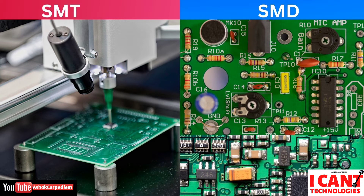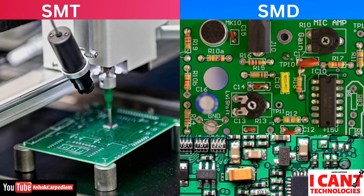For example, think of this as one SMT device. There is some machine which is used to drill the PCB. After drilling we get a hole where we are inserting these kinds of resistors and capacitors, as you can see here. So this is the SMD. This is the exact difference between SMT and SMD.